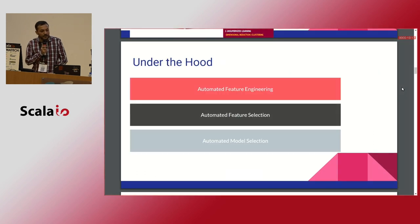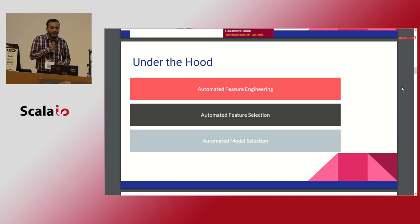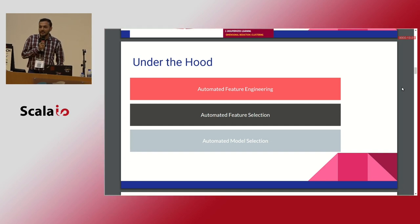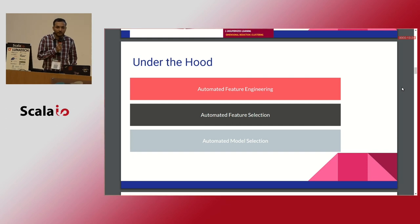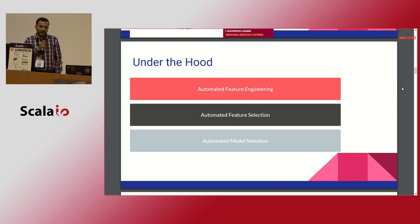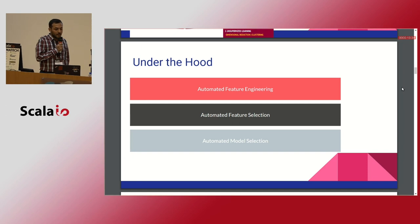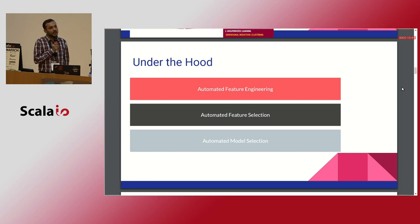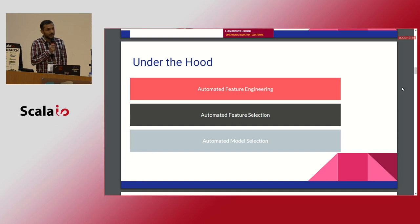Under the hood, what this framework provides is automated feature engineering — there's no need to select which features are important or which are outliers. It also performs automated model selection and gives you all available metrics like accuracy, false positive, recall, and precision.